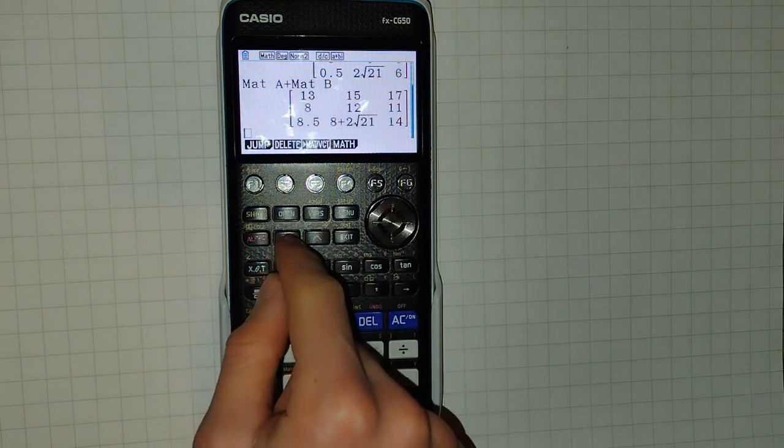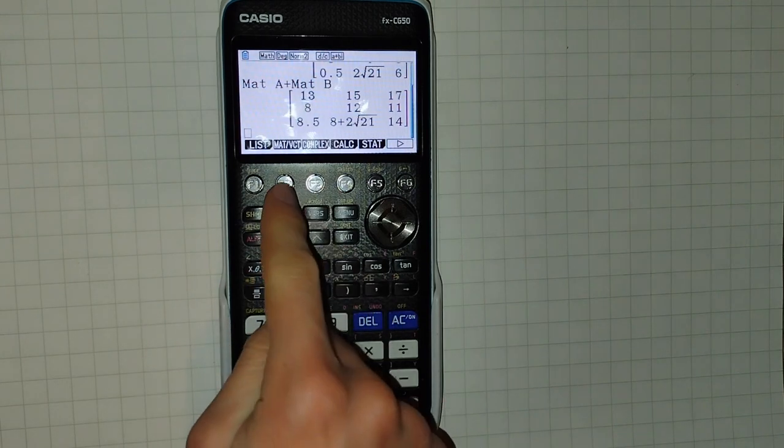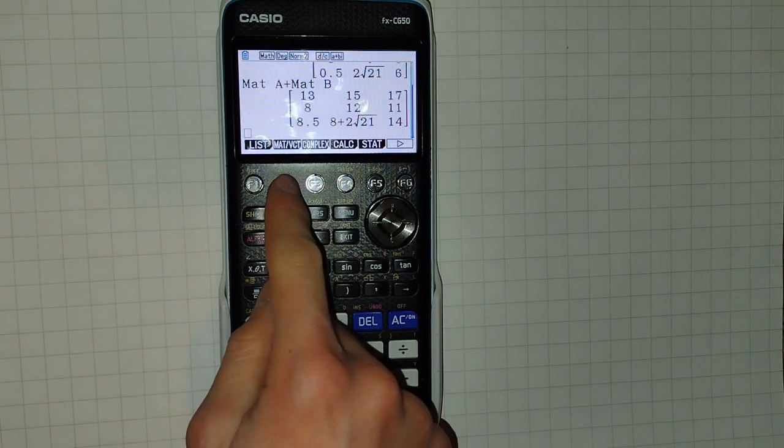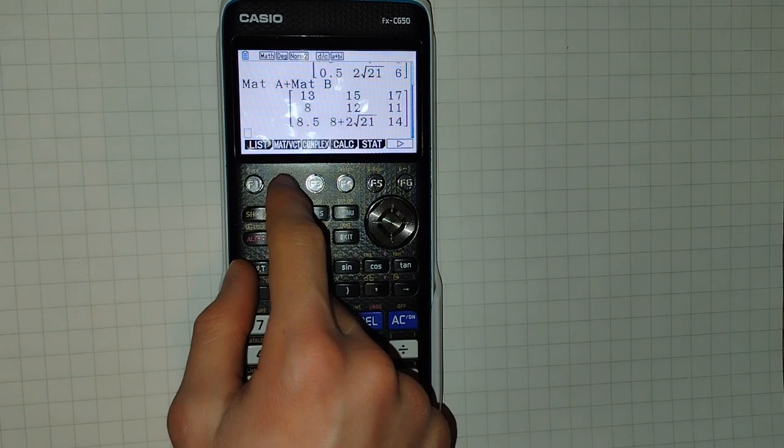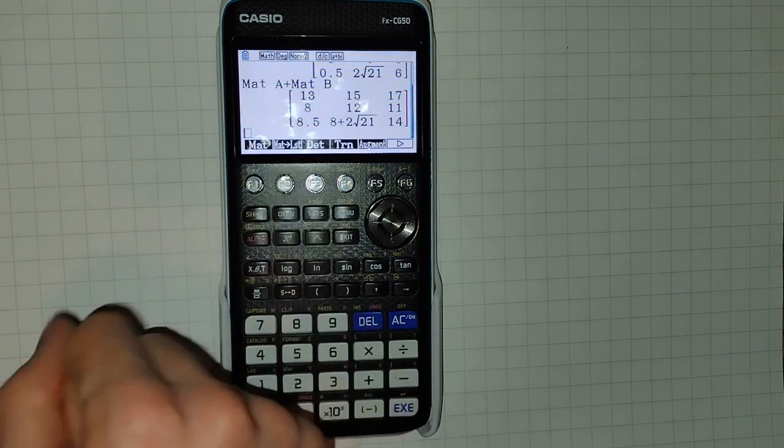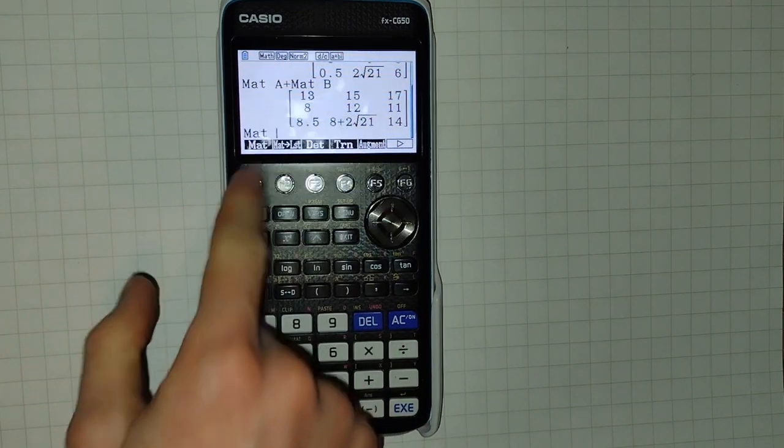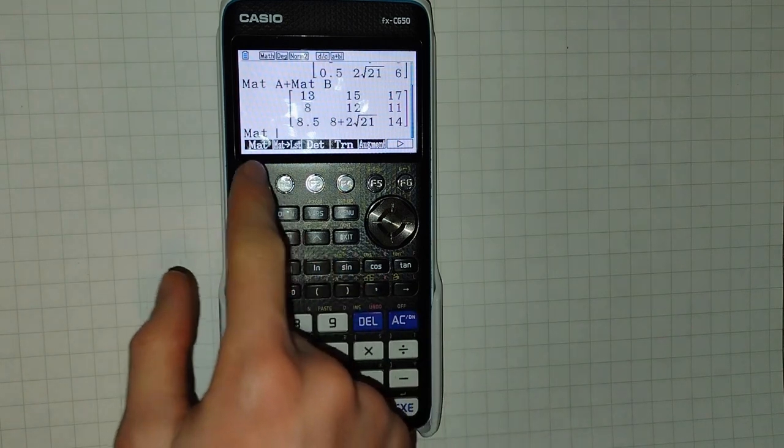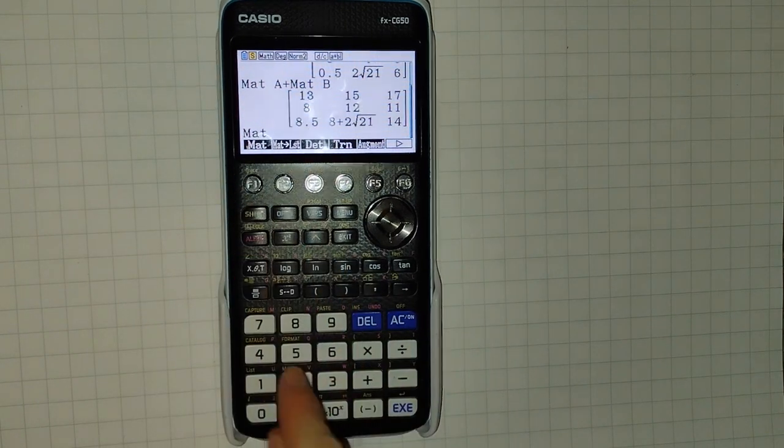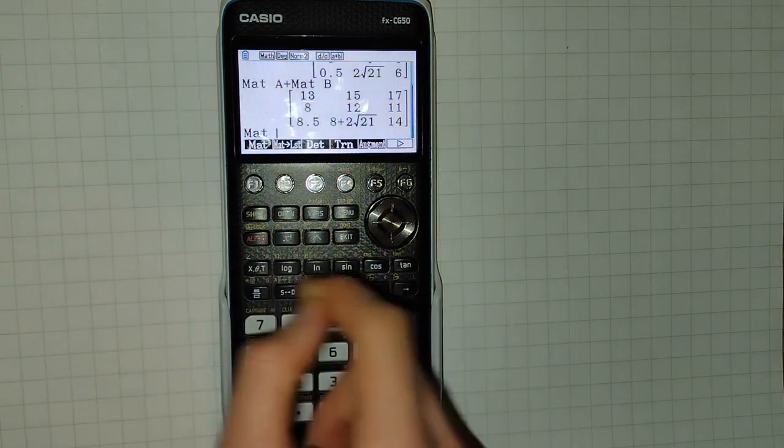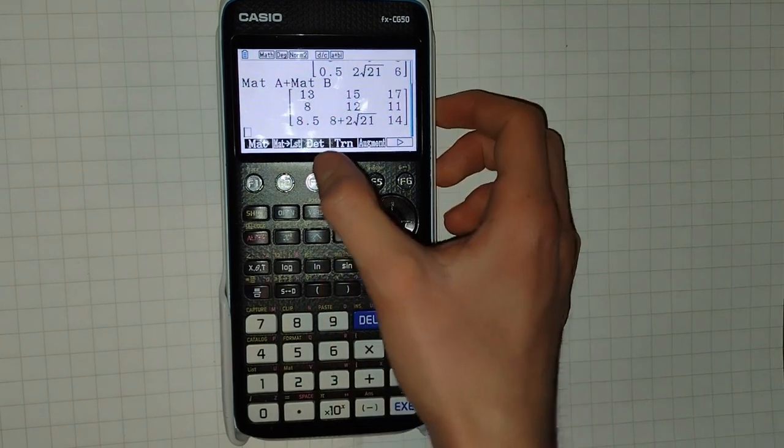For more matrix operations, we need to click Option. Then we can click F2 for matrix/vectors. Here we've got another way of accessing the MAT keyword instead of Shift 2. They both work, and from here we can perform other calculations.